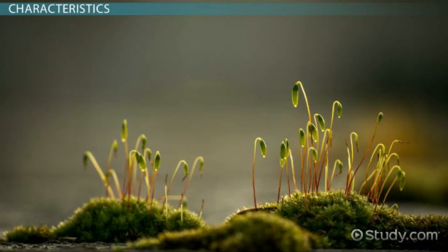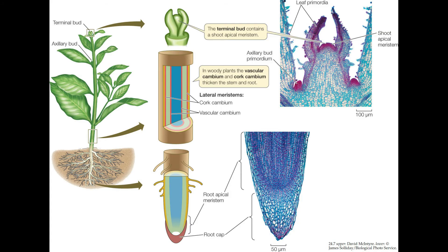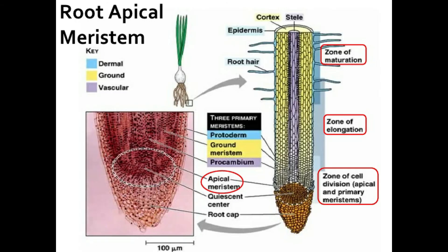A plant has a growth pattern called open growth throughout its life. The plant adds new organs such as branches, leaves, and roots, enlarging from the tip of the root and shoot. Growth is an irreversible increase in size, and development is the programmed series of stages from the simpler to the complex form.